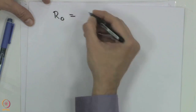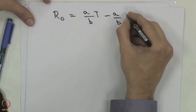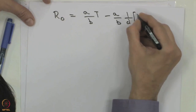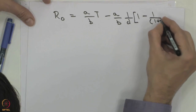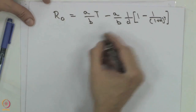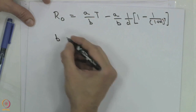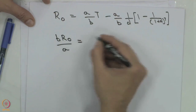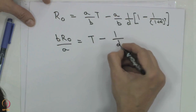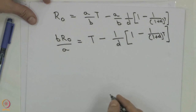Substituting back into the equation, R0 = (A/B)·T minus (A/B)·S, where S = (1/d)·[1 minus (1+d)^(minus T)]. Taking A/B to the other side gives B·R0/A = T minus (1/d)·[1 minus (1+d)^(minus T)]. We can now solve for capital T.